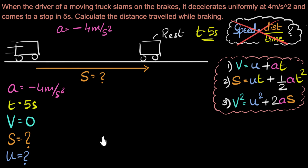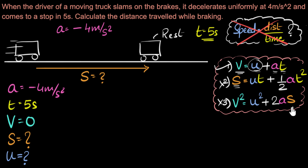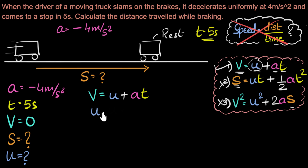To calculate U, look at the first equation: V is known, U is what we need, A is known, and T is known — so we can use the first equation. The second and third equations both contain S, which we don't know, so we must use the first equation. Substituting the known values, U turns out to be 20 meters per second.